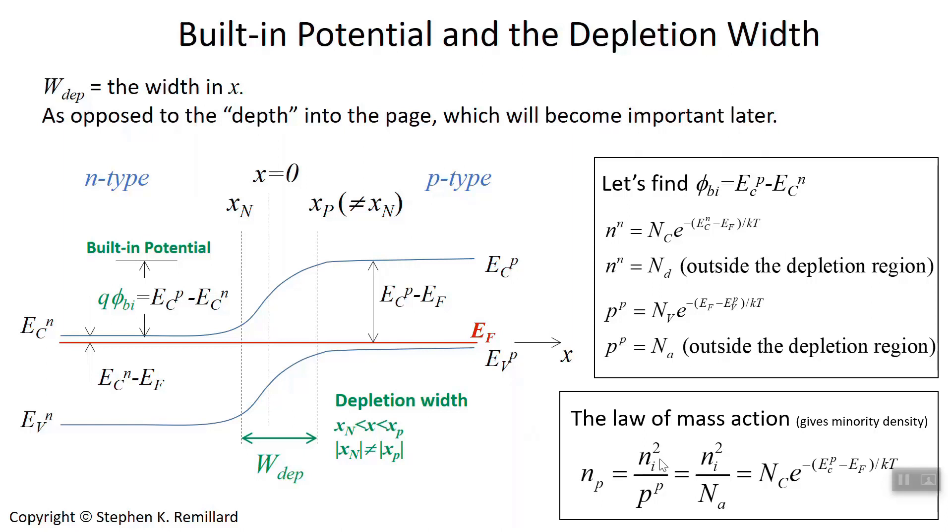For silicon it's 10 to the 10th. But also, it's still equation 1.8.5—it's still the intrinsic density of states N sub C times e to the minus conduction band edge minus E fermi, versus the conduction band edge on the P side. P sub P is the hole concentration on the P side, which is the doping density, so those are the same.